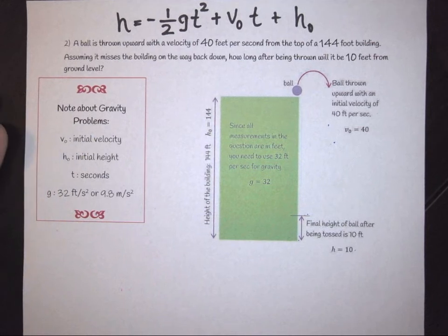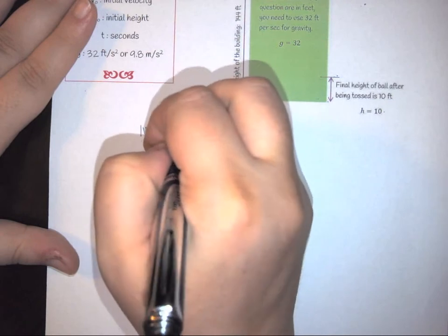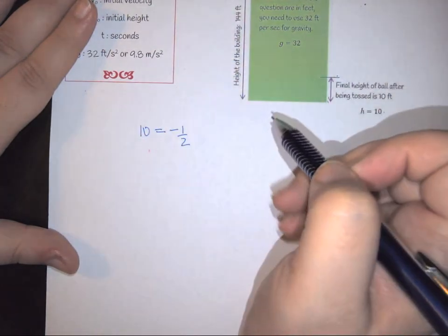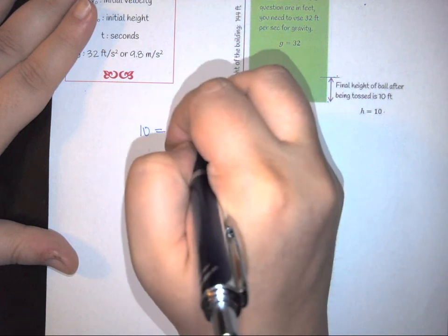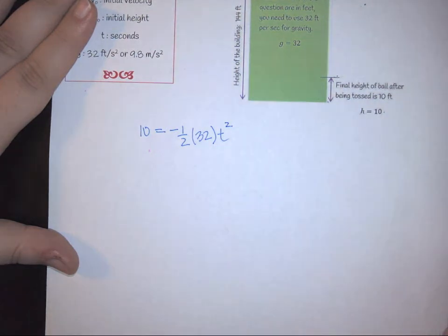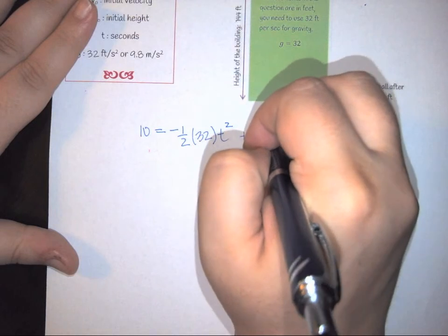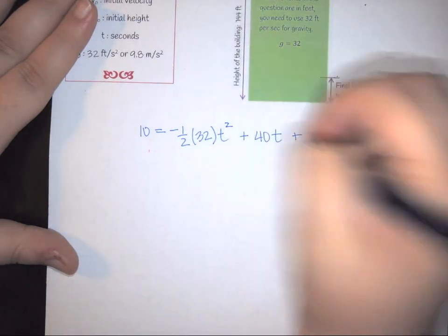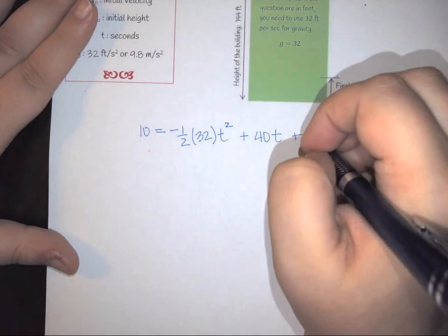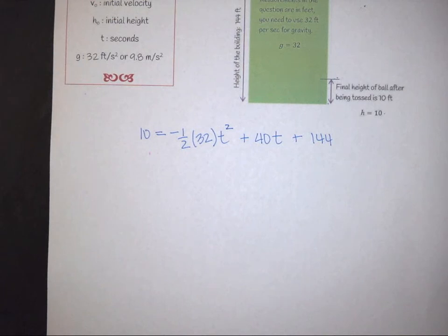We have to plug all that information in. So this is what it's going to look like. So we're told that our final height was 10. We're told that our gravity is 32. So this is going to be that negative 1 half and then times your 32. And then the time is the one thing we don't know, so T squared. Then we're given the initial velocity, which was 40 feet per second. And last, we're given the initial height, which is that the building is 144 feet tall. So that is how you plug everything in.